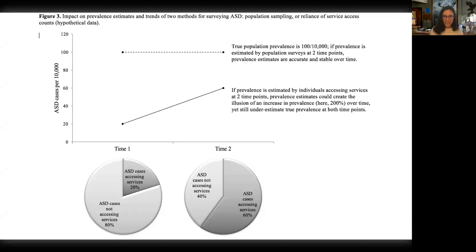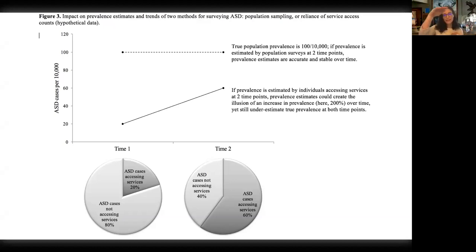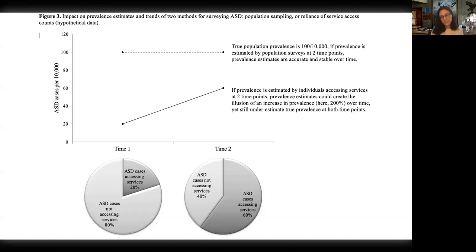This is the hybrid plot I came up with to show the takeaways we wanted to communicate. It's saying two messages: first, over time, even though the true population prevalence is staying the same — flat-lining, not increasing from time one to time two — the bottom portion shows that at time one there's a lower number of people accessing services, but at time two that has increased. The idea is that if prevalence is estimated just by individuals accessing services at two time points, it could look like there's an illusion of explosion in prevalence — even a 200% increase — yet we're still underestimating prevalence at both time points and the true prevalence has held steady.